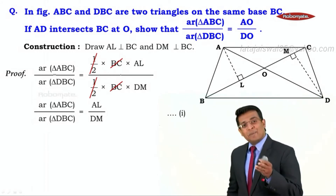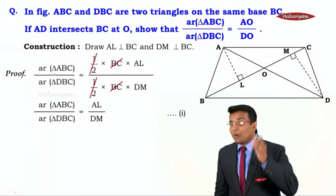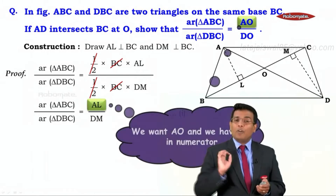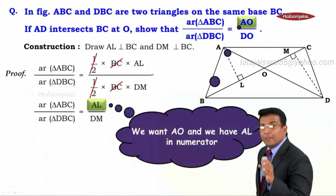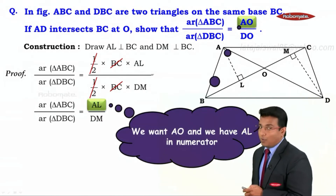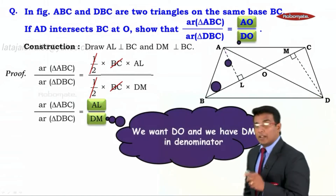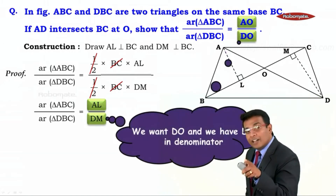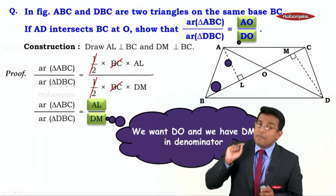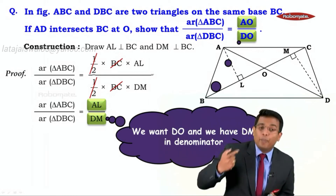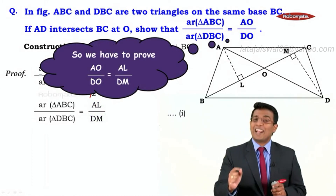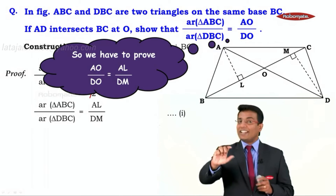We have the left-hand side of the proof. Now focus on the right-hand side: we want AO in the numerator, but we have AL; and we want DO in the denominator, but we have DM. That means we need to prove that AO upon DO equals AL upon DM. If we get this, we have the proof.